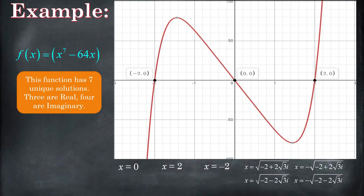If we graph this function, there are seven solutions but only three x-intercepts, because three of the roots are real and four are imaginary. Imaginary numbers don't show up on the Cartesian coordinate plane — they're on the complex number plane.